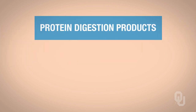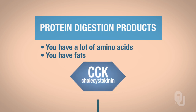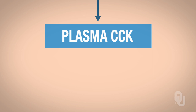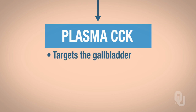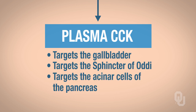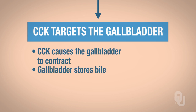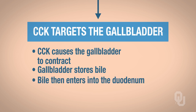Now let's look at the stimuli where you have high protein digestion products—in other words, a lot of amino acids—and you have fats. That's going to stimulate the synthesis and secretion of CCK from the duodenum and the jejunum. CCK is a hormone that travels out into the blood and gets into the plasma. It's going to target the gallbladder, the sphincter of Oddi, as well as the acinar cells of the pancreas—three targets for CCK. When CCK targets the gallbladder, it's going to cause the gallbladder to contract. We know the gallbladder stores bile, so bile then enters into the duodenum, where it neutralizes the acids and emulsifies the fats.